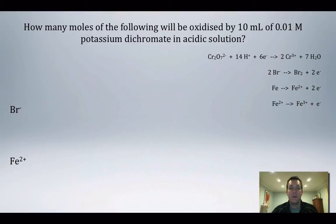First question says: How many moles of the following, that's Br⁻ and Fe²⁺, will be oxidized by 10 milliliters of 0.01 mole per liter potassium dichromate in acidic solution? Just before we start, dichromate doesn't have to be potassium dichromate—it could be sodium dichromate, which is a really common oxidizing agent.